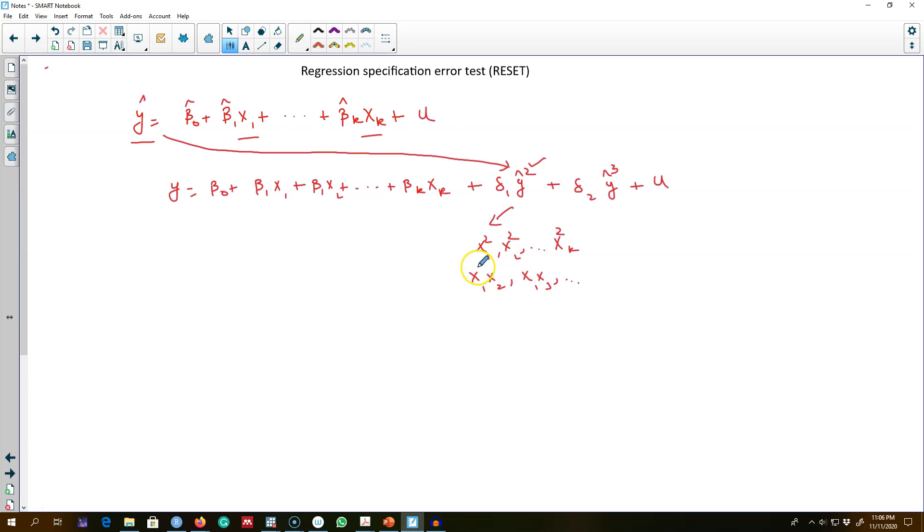We should be including these x variables in a square term, and also we should be including these x variables in interaction terms. Similarly, this y hat cube contains all these cubic terms, etc.